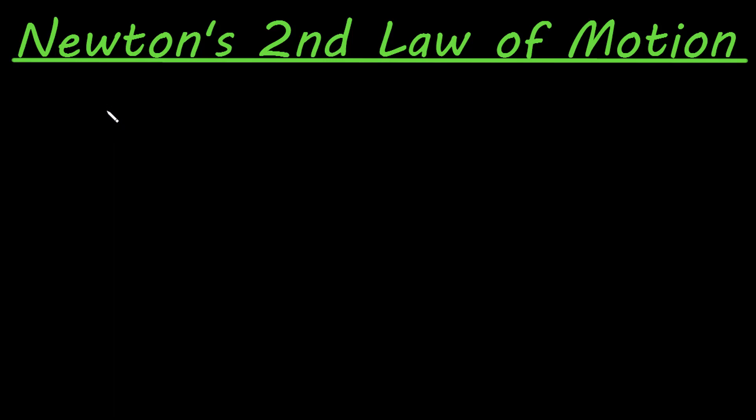Let's take a look at Newton's second law of motion. What his second law of motion says is that F net, the net force on an object, is equal to ma—the object's mass times its acceleration.